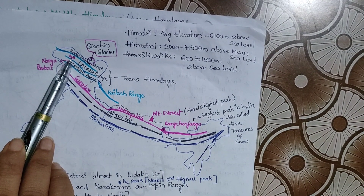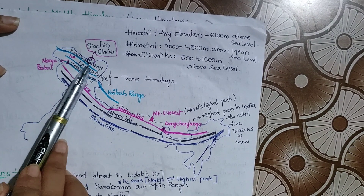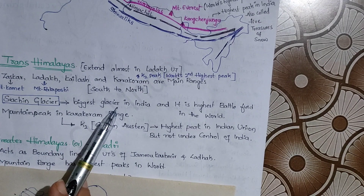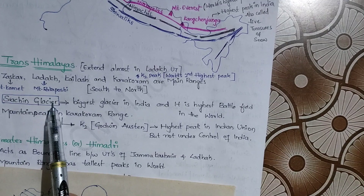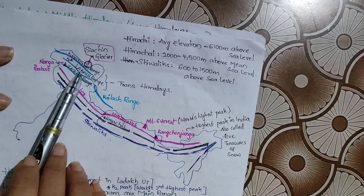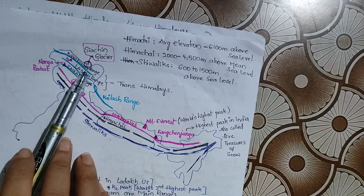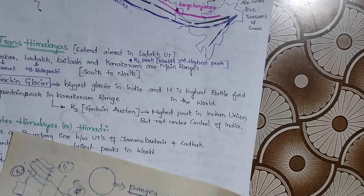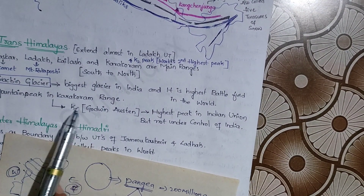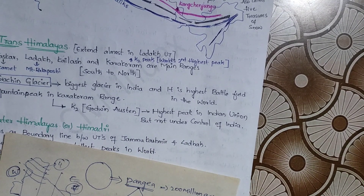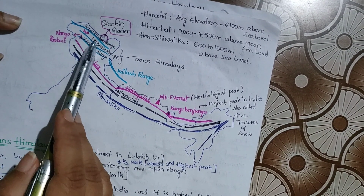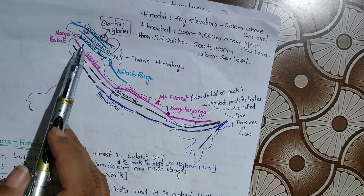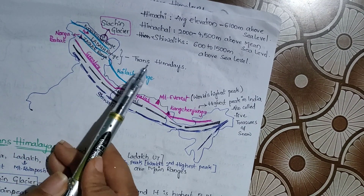K2 peak is in the Karakoram range and is the second highest peak in the world. The Siachen Glacier is also located here in the Karakoram range - it is the biggest glacier in India and also the highest battlefield in the world. K2 is the highest peak within the Indian Union territory but is not under India's control. These are all important points about the Trans-Himalayan Zone.